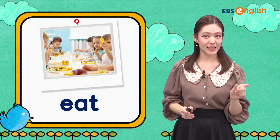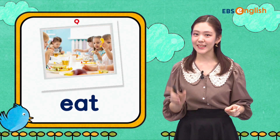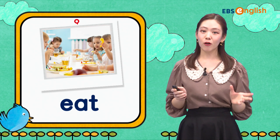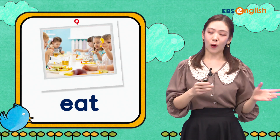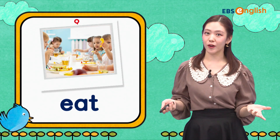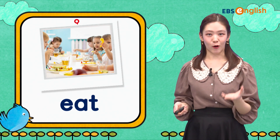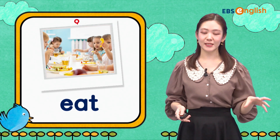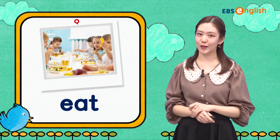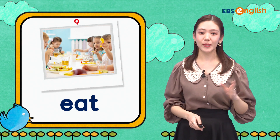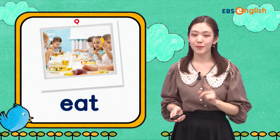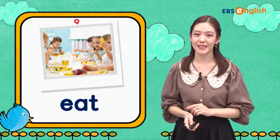IT와 오늘 배울 단어 eat의 발음 차이 주의하셔야 합니다. 영어 동사는 시제 — 과거, 현재, 미래에 따라서 모양이 바뀌어요. 또 나, 너, 우리, 그, 그녀, 그들 이렇게 주어에 따라서도 모양이 바뀝니다. 시제와 인칭에 따라서 오늘 배울 동사 eat가 어떻게 바뀌는지 한번 알아볼게요.